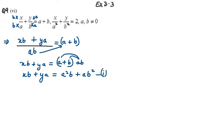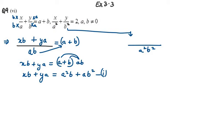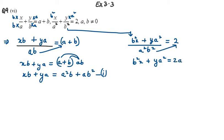Now for the second part, we solve similarly, but the LCM term here is A²B². We need to make the first term into A²B², so we multiply the first term by B² to get B²X, and the second term by A² to get YA². Using cross multiplication, we get B²X plus YA² equals 2A²B². This is equation number two. Now we can use any method to find the values of X and Y.